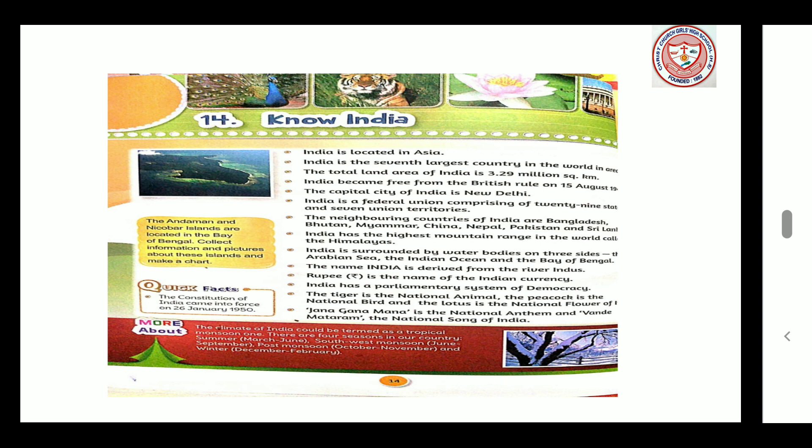India has the highest mountain range in the world called the Himalayas. India is surrounded by water bodies on three sides: the Arabian Sea, the Indian Ocean and the Bay of Bengal. The name India is derived from the river Indus. Rupee is the name of the Indian currency. India has a parliamentary system of democracy. The tiger is the national animal, the peacock is the national bird, and the lotus is the national flower of India. Jana Gana Mana is the national anthem and Vande Mataram the national song of India.